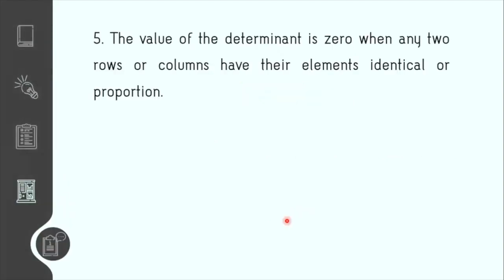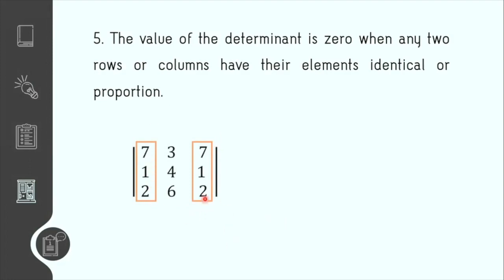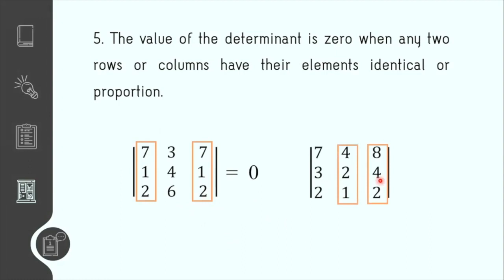Theorem number 5 states that if any two rows or columns have the same or proportional elements, the value of the determinant will be 0. For example, the first column and the third column have identical elements, so the determinant equals 0. In another case, the second column and third column are proportional — the common factor in the third column is 2. Dividing 8 by 2 gives 4, dividing 4 by 2 gives 2, and dividing 2 by 2 gives 1. If we solve this, the value of the determinant will also be 0.